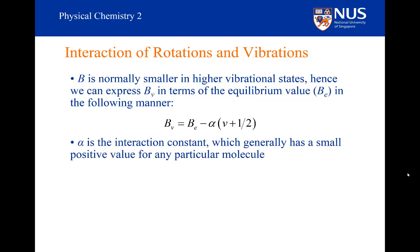The alpha constant is known as the interaction constant. It is generally a small positive value because, as you can see, as we go to higher vibrational energy levels, the rotational constant gets smaller and smaller. So that would be the case if alpha is a small positive value.